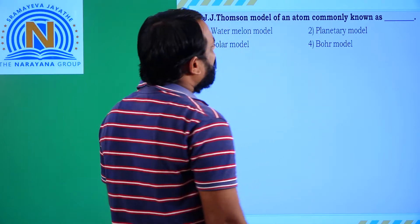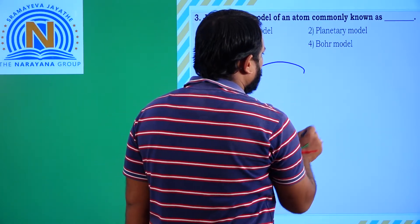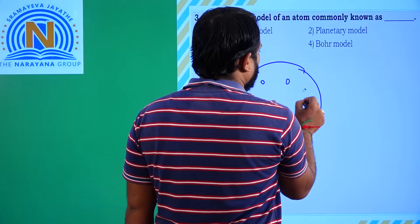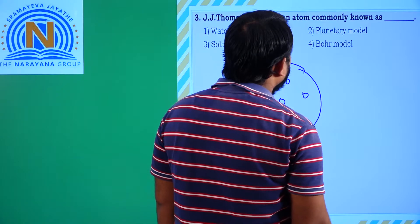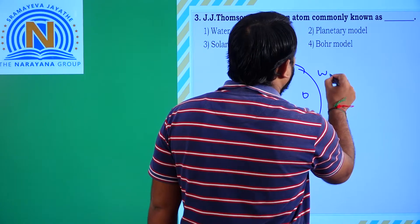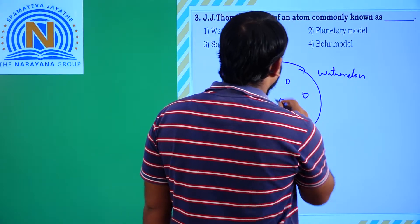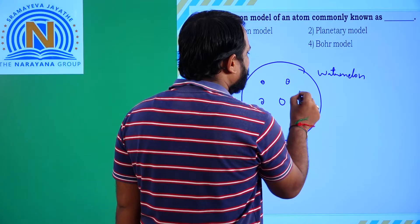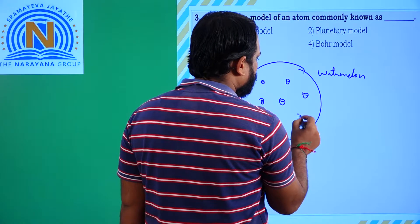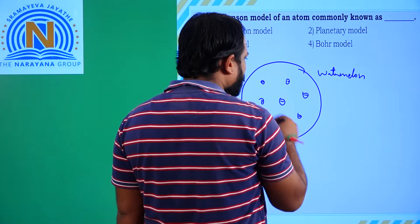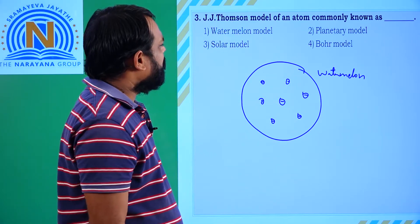J.J. Thomson model of an atom is commonly known as? J.J. Thomson explained and compared the atomic model to the watermelon model. In the watermelon, the seeds represent the negatively charged particles present inside, and the remaining red portion represents the remaining charge of the atom.